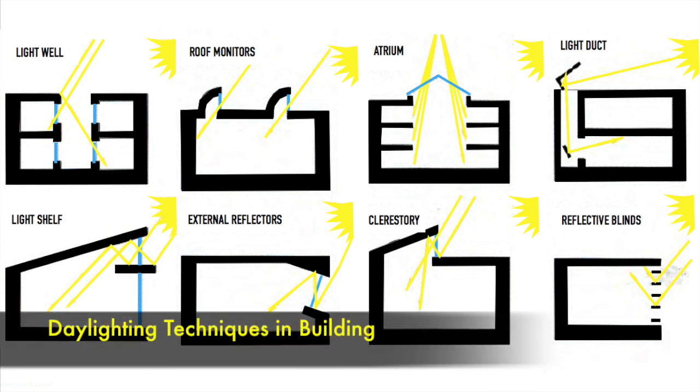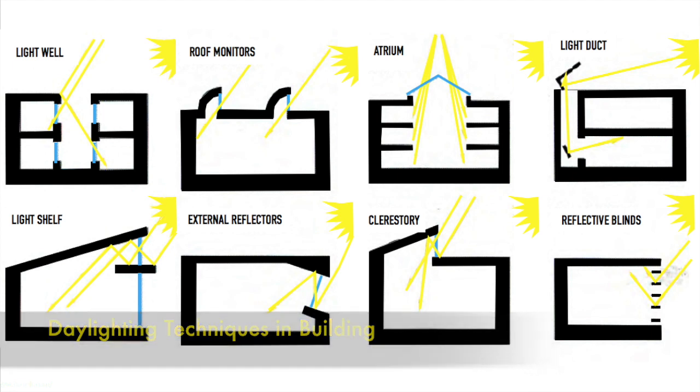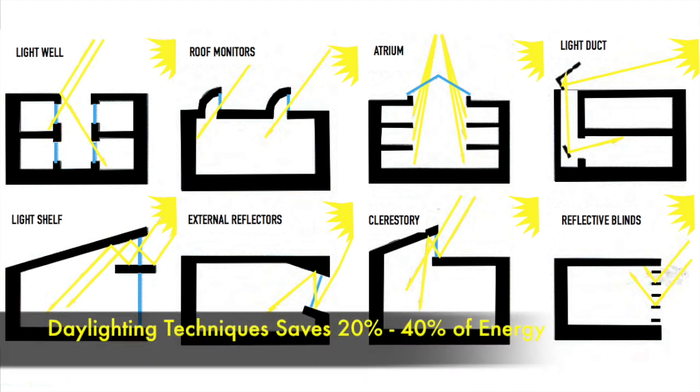Daylighting systems harvest natural light and create a more desirable indoor environment. Depending on building's location and orientation, a daylighting system has the potential to save up to 20 to 40 percent of the energy.